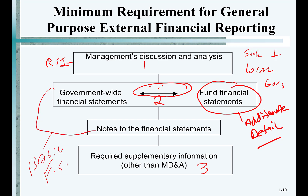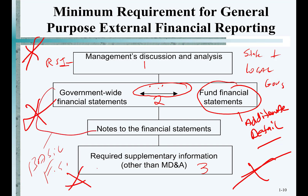You've got to know this structure. First thing you see: MD&A. Second thing: basic financial statements — government-wide statements, fund financial statements, and the notes. Third thing: required supplemental information other than MD&A. Is all of this required? Yes. How long I spend on a slide is usually a good indication of what's important — and I'll put stars next to key items.